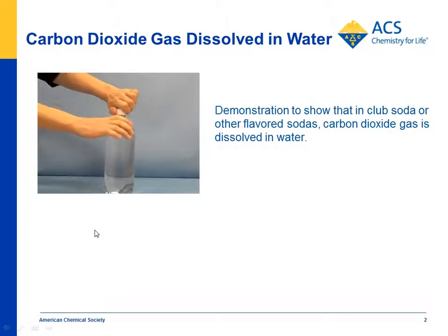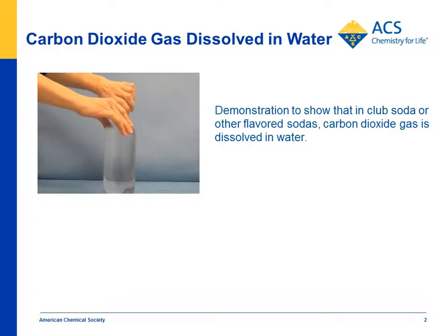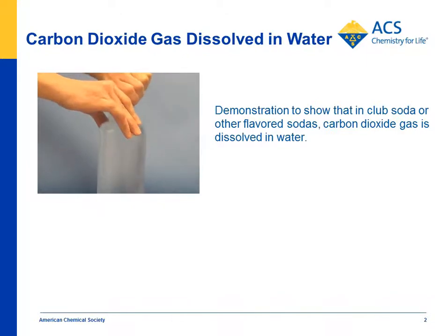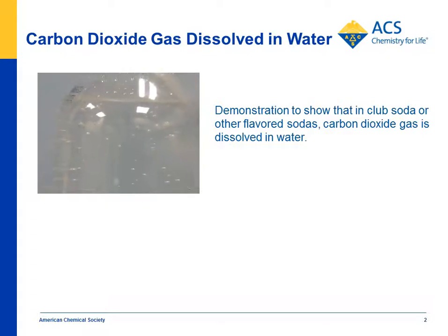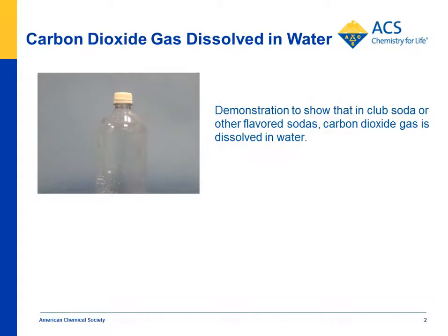The first thing you can do is show kids how loosening the top of a seltzer water bottle or club soda causes the carbon dioxide in the water to come out of solution. The idea is that there's a lot of carbon dioxide in that water, and that it was packed under pressure, and releasing the pressure allows the carbon dioxide to escape from the solution.